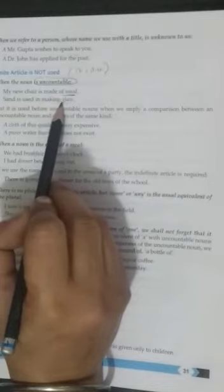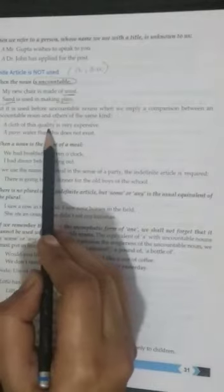Sand is used in making glass, which is uncountable. But it is used before uncountable noun when we imply a comparison between an uncountable noun and others of the same kind.